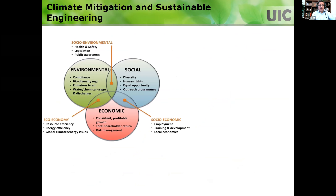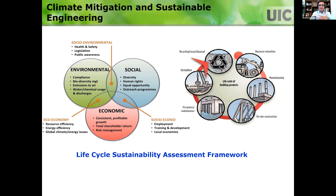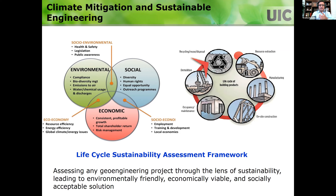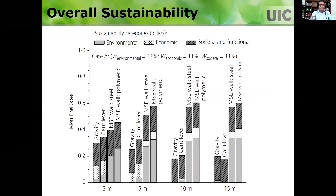In the long run, we should be looking at climate mitigation — reducing greenhouse gases — and addressing socioeconomic issues in a broader way. This can be accomplished through triple bottom line aspects: environmental, economic, and social aspects. We need to consider life cycle stages. We should be looking at a life cycle sustainability assessment framework to achieve environmentally friendly, economically viable, and socially acceptable solutions in geotechnical and geo-environmental engineering. For example, if you have four different types of retaining walls, which one is more sustainable? We should use sustainability assessment to make that decision. The same applies in geo-environmental engineering — remediation technologies and waste containment technologies can all be optimized.